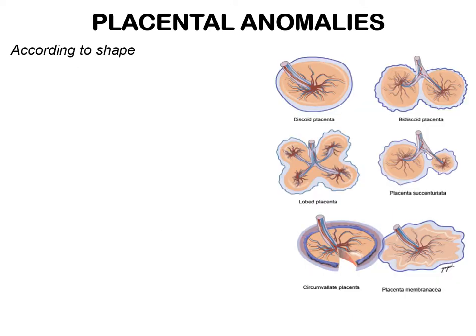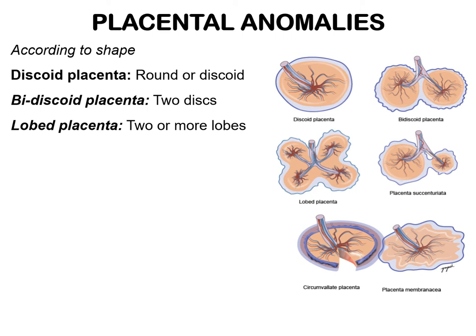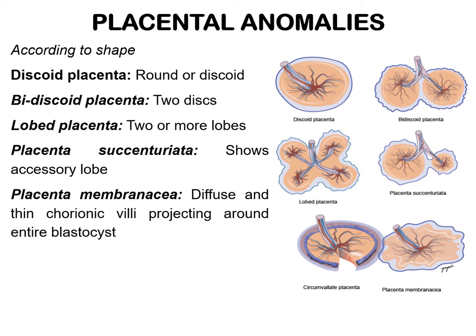Based on shape, the placenta may be discoid, bidiscoid, or lobed. Presence of an accessory lobe with vascular connections with the main placenta is known as placenta succenturiate. Sometimes, when the chorionic villi persist all around the blastocyst cavity, thus forming a thin, diffuse placenta membranacea.